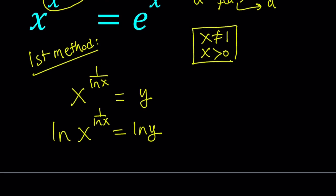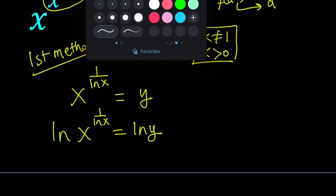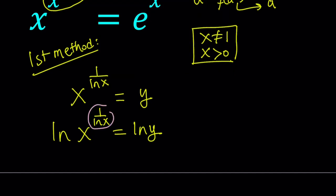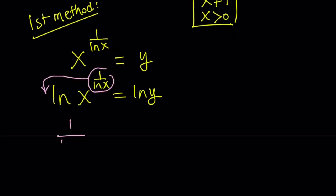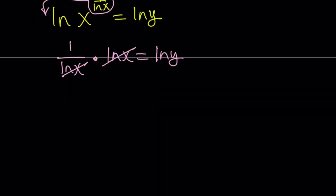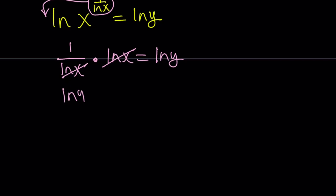Using the power property we can move the exponent to the front, giving us (1 over ln x) times ln x equals ln y. Now ln x cancels out, leaving us with 1, so we get ln y equals 1. That just means y equals e, Euler's number.